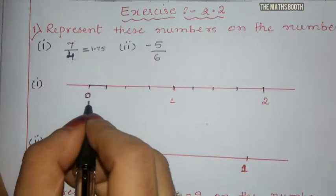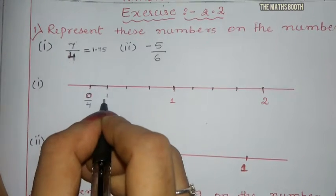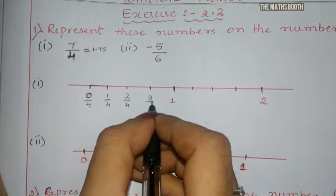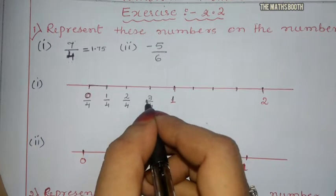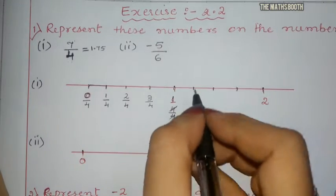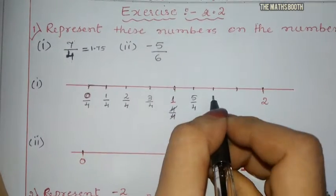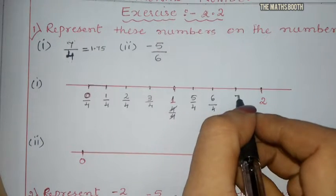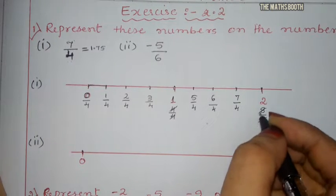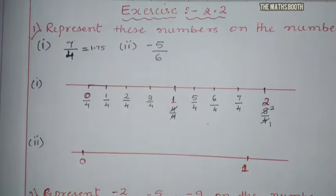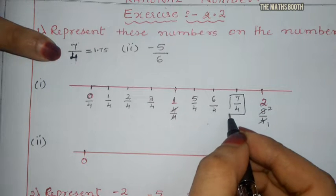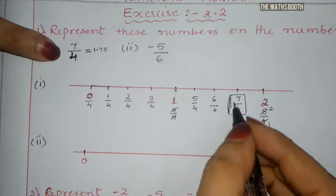See 7 by 4 now. Starting from 0: 0 by 4, then 1 by 4, 2 by 4, 3 by 4. Then 4 by 4 — 4 gets cancelled, that is nothing but 1. Then 5 by 4, 6 by 4, 7 by 4, and 8 by 4 — 8 by 4 is nothing but 2. So our answer is 7 by 4, and we represent it at that point on the number line.